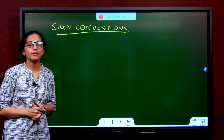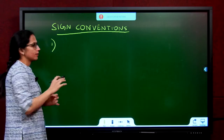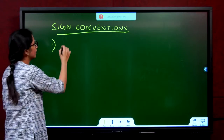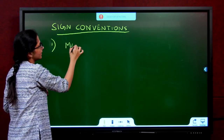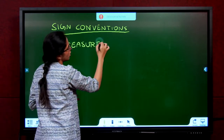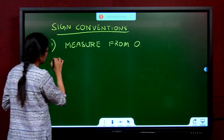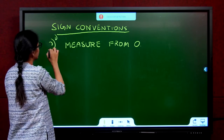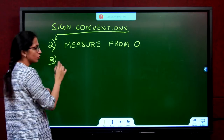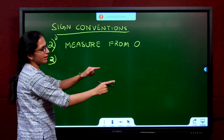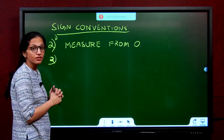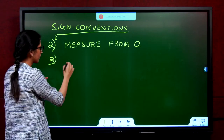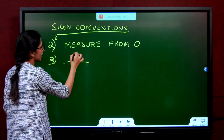Now, what are the sign conventions for spherical lenses while solving problems? They are the same as for mirrors. In mirrors you measure distances from the pole; here you measure distances from the optic center. Keep the object on the left and the lens on the right. All distances measured in the direction of the incident ray are positive; against the direction are negative. Heights above the principal axis are positive, below are negative — this is nothing but the Cartesian plane.